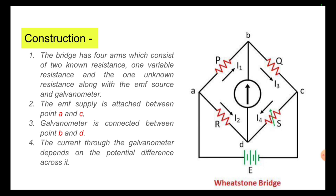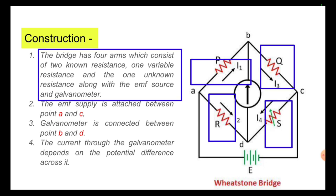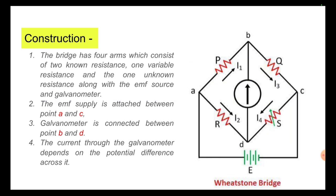Regarding the construction, the bridge has four arms which consists of two known resistances, one variable resistance, and one unknown resistance, along with the EMF source and galvanometer.